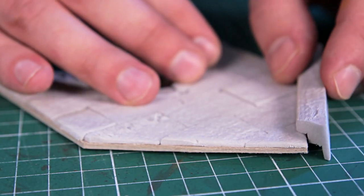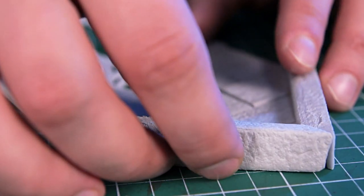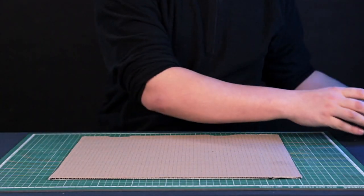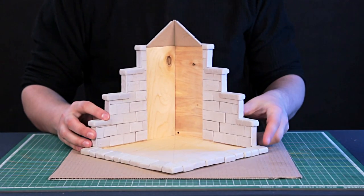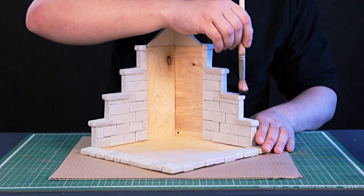I will also glue two cornices to the wall. They will cover the gap that will appear when I glue the wall to the main part. When the glue dries well, you can start painting. I will use only two colors, black and white. Each new layer is lighter than the previous one.